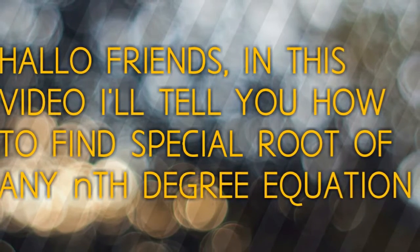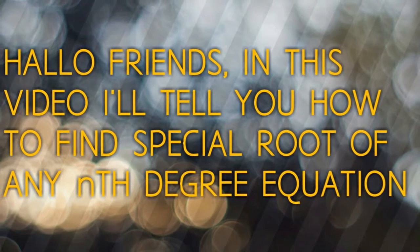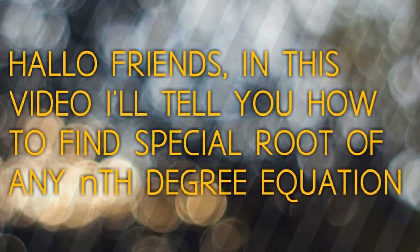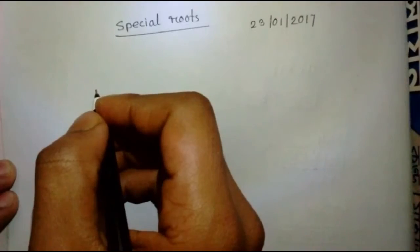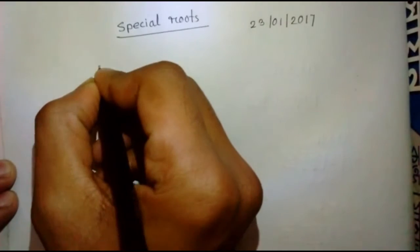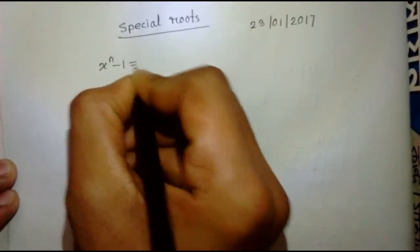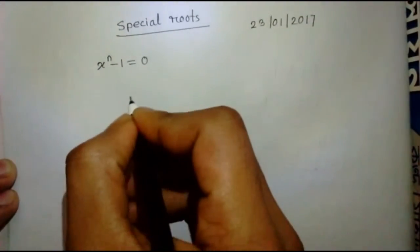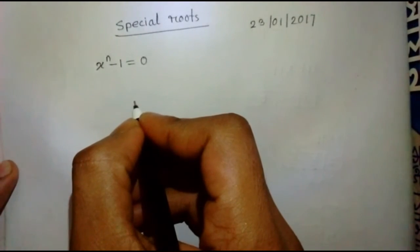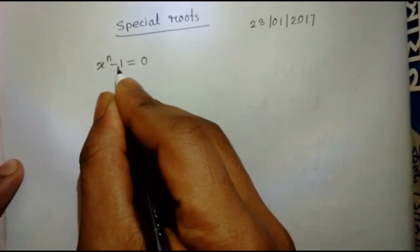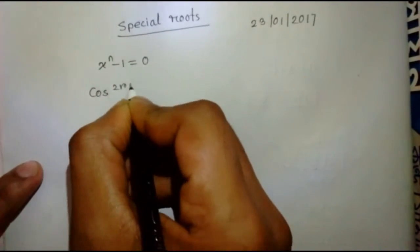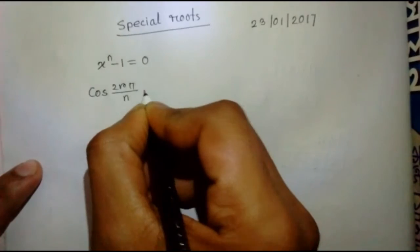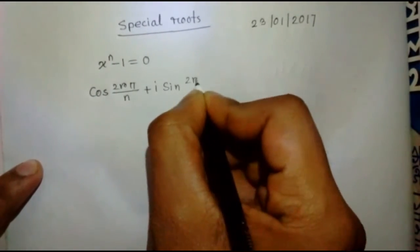Hello guys, in this video I will tell you how to find the special root of any nth degree equation. Let's get started. The general equation of nth degree is x to the power n minus 1 equals 0. The formula for the special root is cos(2rπ/n) plus i·sin(2rπ/n).